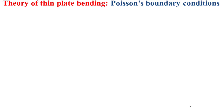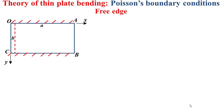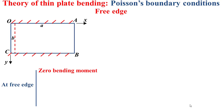Now I'll discuss the third Poisson's boundary condition: the free edge. Based on the model in this slide, we have clamps on edges OA and CB, and a simply support at edge OC. The edge AB is therefore the free edge, meaning there is no clamp or simply support there. This edge AB is defined by the direction x equal to a. At a free edge, we have zero bending moment, zero twisting moment, and zero shear force — that is the fundamental idea of a free edge.